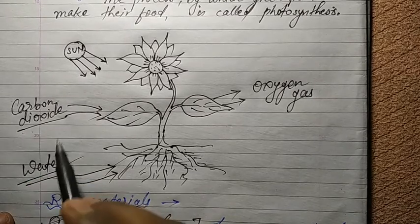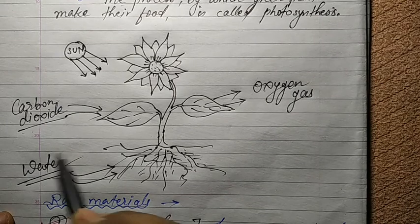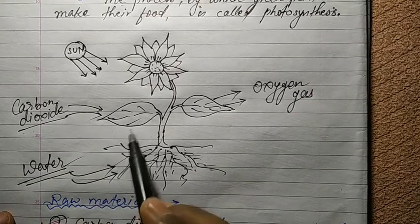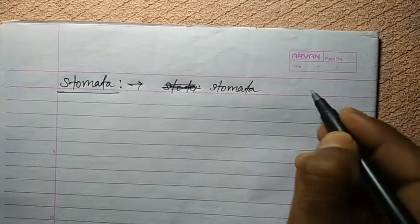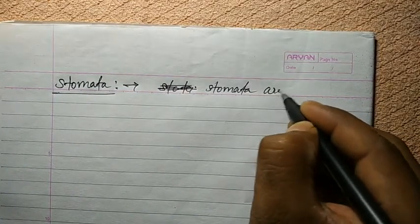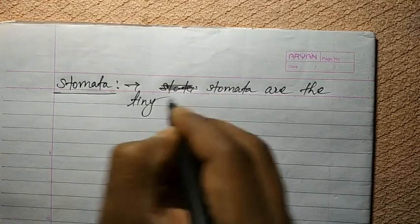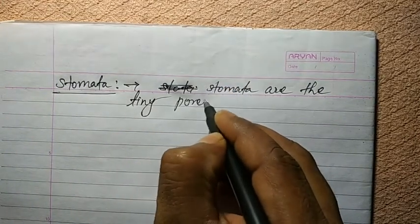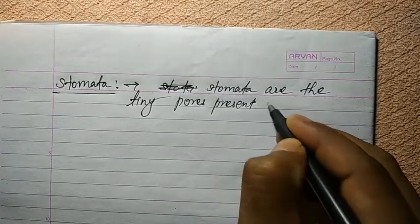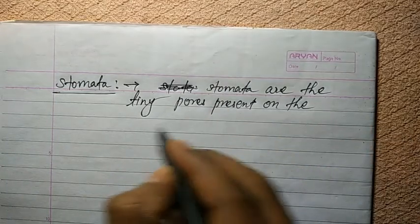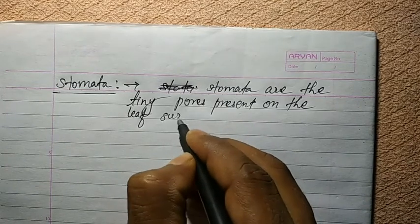Plants get carbon dioxide from the air through stomata. The stomata are the tiny pores present on the leaf surface.